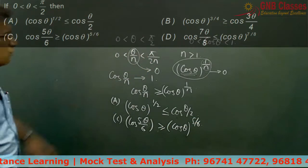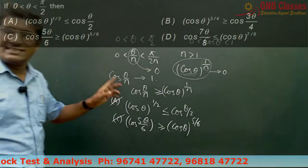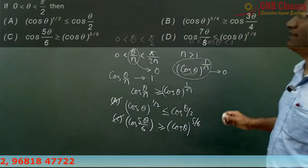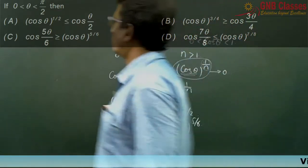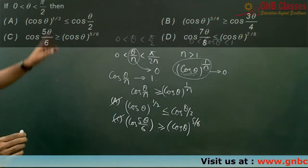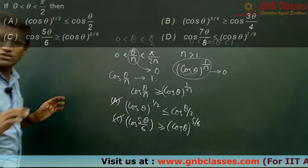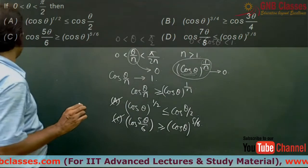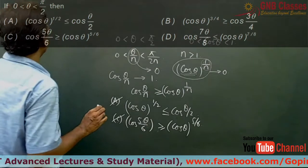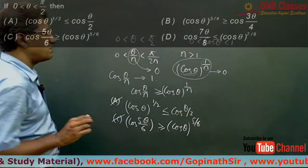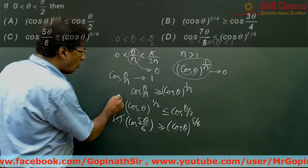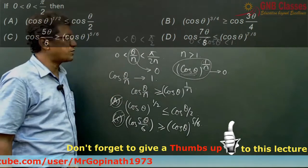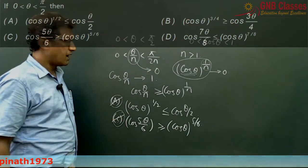Therefore your option A and C are correct, but B and D are not correct. Because in B they have given you that cos theta whole to the power 3 by 4 is greater than equals to cos 3 theta by 4, which is not true. At the same time your option D, they have given us cos 7 theta by 8 is less than equals to cos theta whole to the power 7 by 8. That is also not correct. So these two options are correct, option A and C. It's a good question. It came in our West Bengal joint entrance examination.